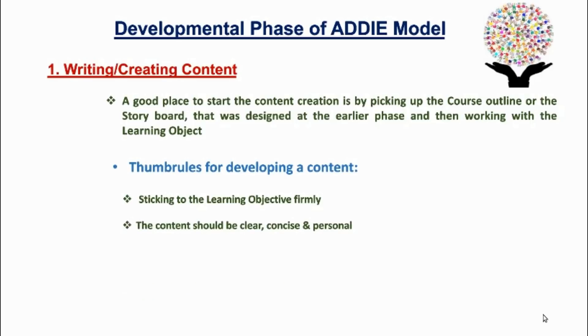Then the content should be clear, concise, and personal. That is, the content should be written in such a way as if we are talking to one individual and not to an anonymous group. For that, the content has to be such that the target learner can understand it easily without anybody else's help.